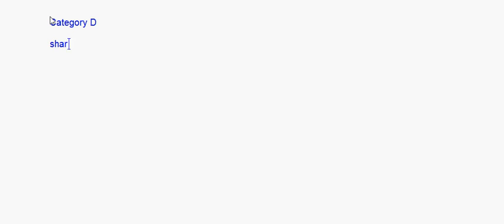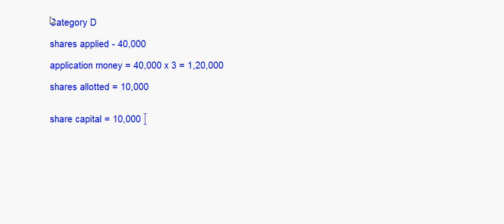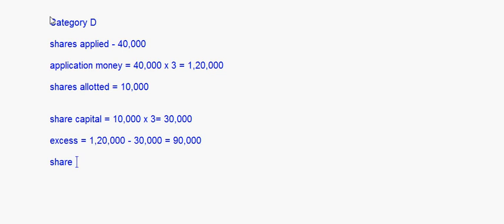Category D: shares applied is 40,000, so application money received is 40,000 into 3 which equals 1,20,000. Shares allotted is only 10,000, so the amount going into share capital is 10,000 into 3 which equals 30,000. The excess after this is 1,20,000 minus 30,000 which equals 90,000.